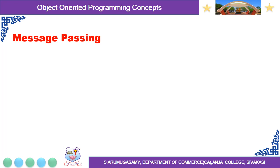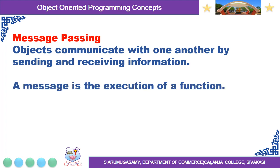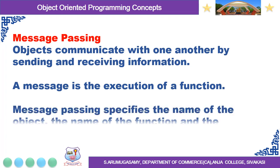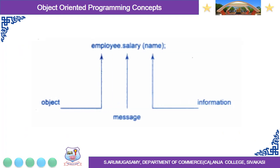The next concept is Message Passing. Objects communicate with one another by sending and receiving information. A message is the execution of a function. Message passing specifies the name of the object, the name of the function, and the information to be sent. This diagram shows the concept of message passing. Here, employee is the object, salary is the message, and name is the information.